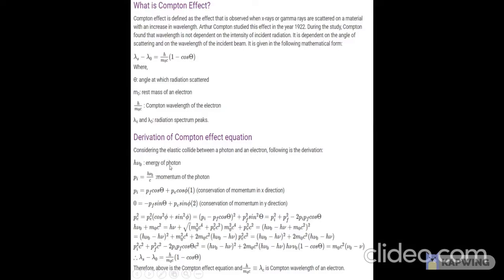h nu 0 is the energy of the incident photon. p initial equals p i equals h nu 0 by c, which is the momentum of the photon initially targeted at the electron. By conservation of momentum in the x direction, we can say that p i equals p final cos theta plus p electron cos phi.